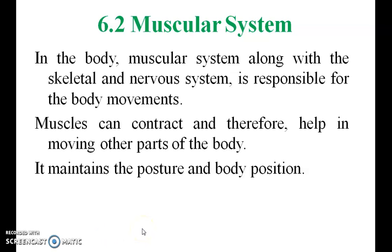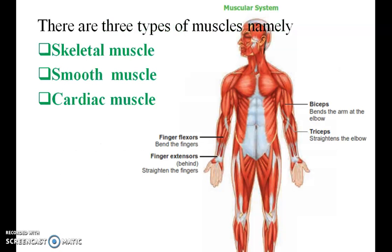The muscular system, along with the skeletal and nervous system, is responsible for body movement. Muscles can contract and therefore help in moving other parts of the body. It maintains the posture and body position. There are three types of muscles: skeletal muscles, smooth muscles, and cardiac muscles.